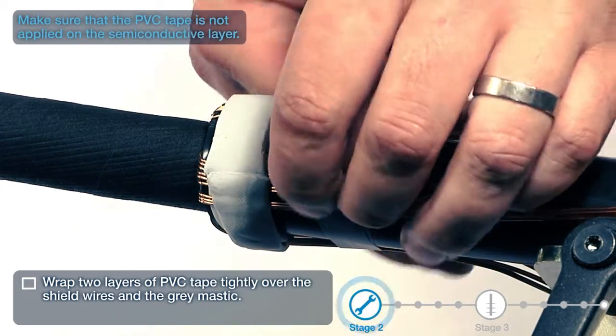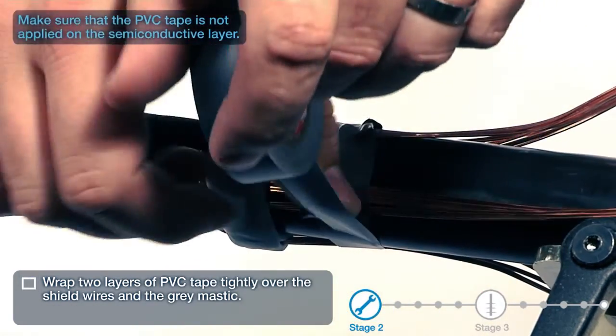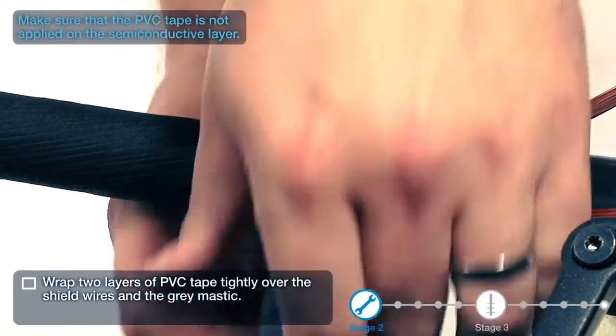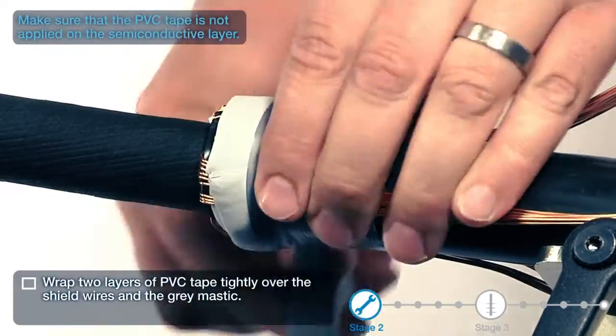Wrap two layers of PVC tape tightly over the shield wires and the grey mastic. Make sure that the PVC tape is not applied on the semi-conductive layer.